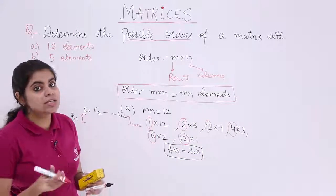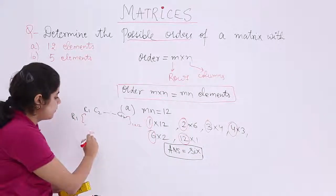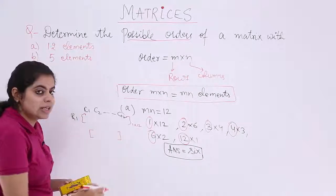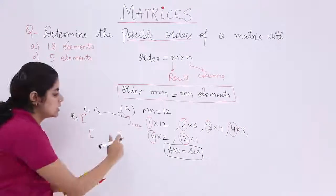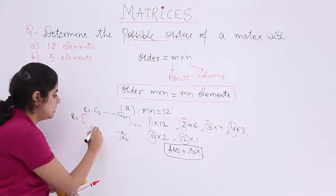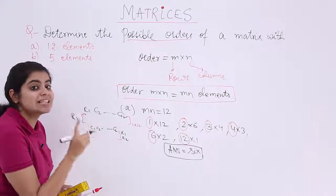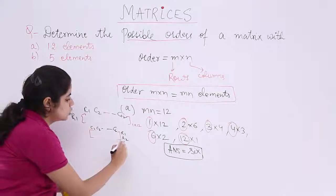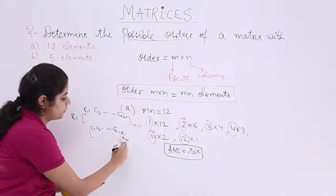What about 2 by 6? 2 by 6 means 2 rows and 6 columns. So it is R1, R2 as 2 rows, C1, C2 till C6 as 6 columns. So that is 2 by 6.